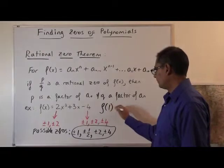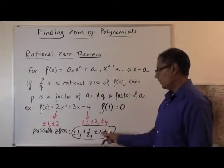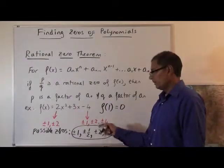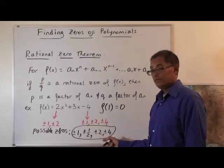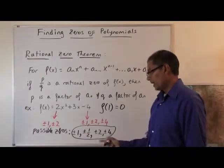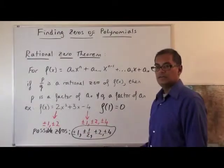In other words, f of one equals zero, just by inspection, just by plugging each of these in. Now, these didn't have to be a zero of the function, but it happens that one of these is a zero.